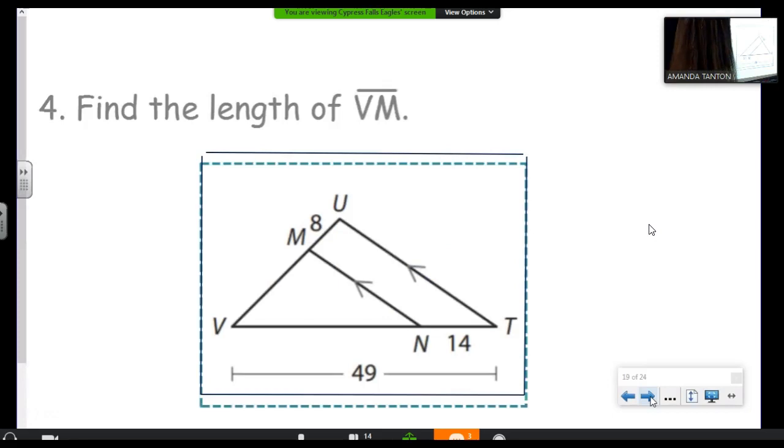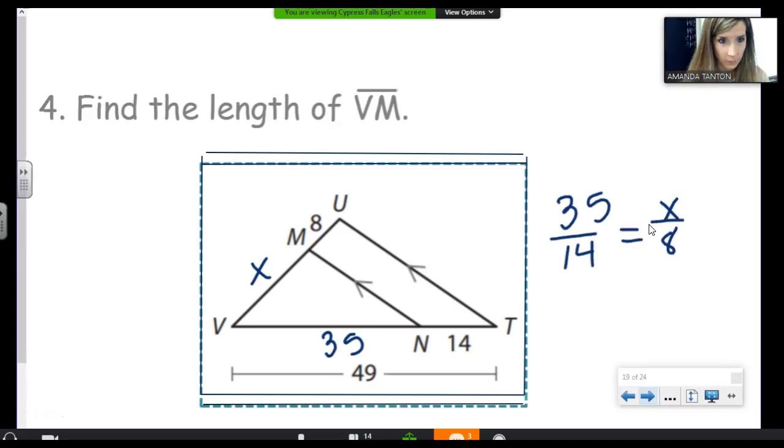Here's another one where we would need to subtract. So we'll start with 49 minus 14 so that we can use our theorem. 35 is to 14 as X is to 8. Easy, easy, easy. 20 again.